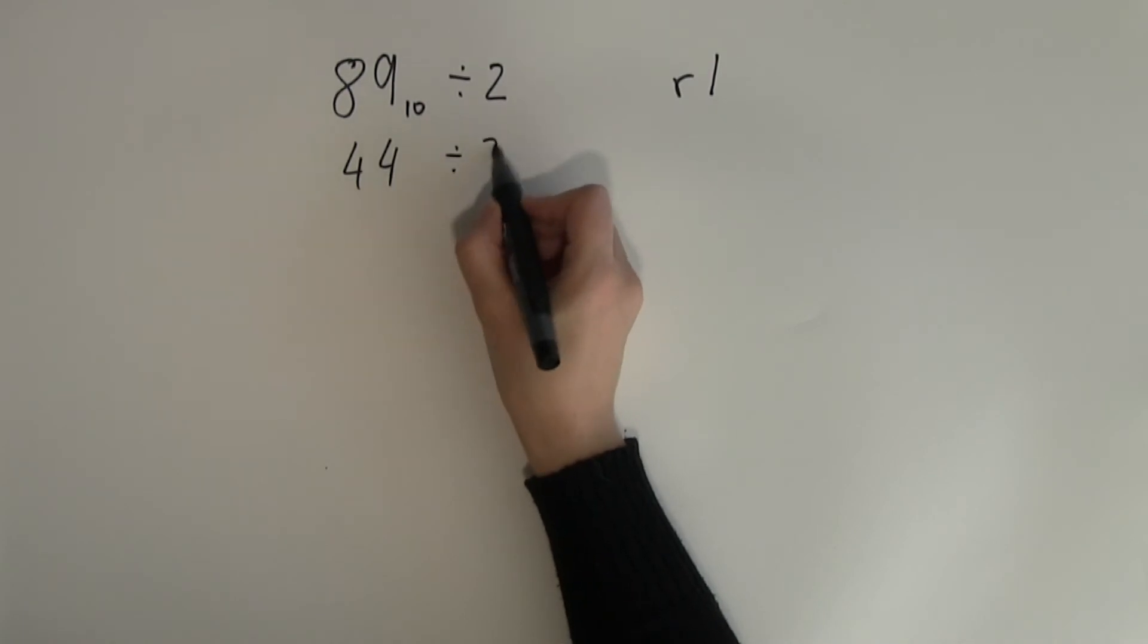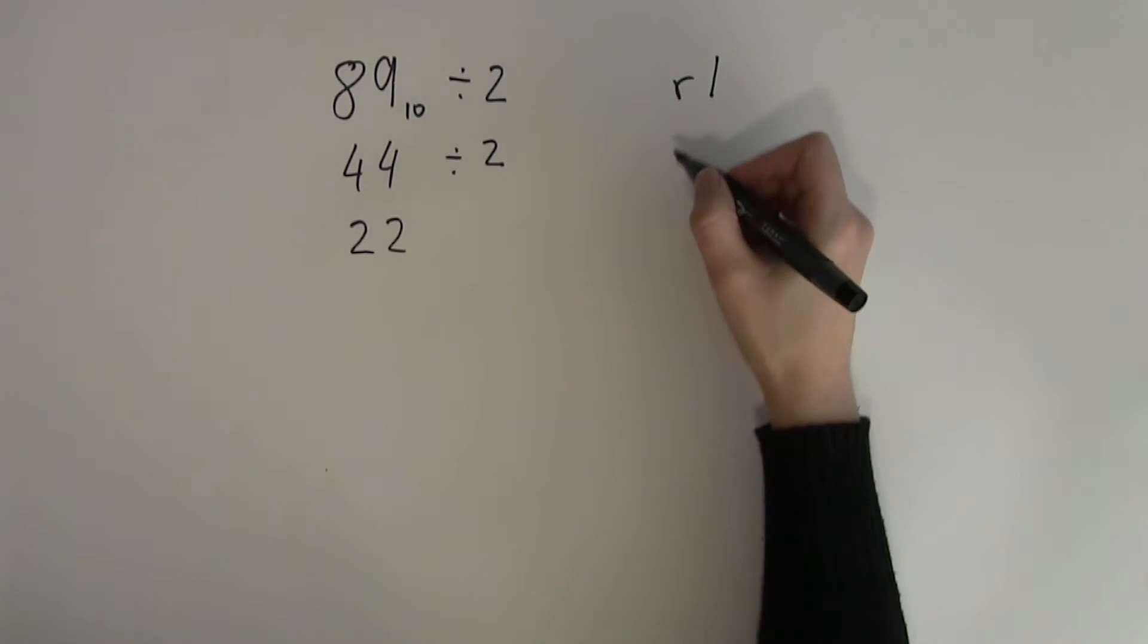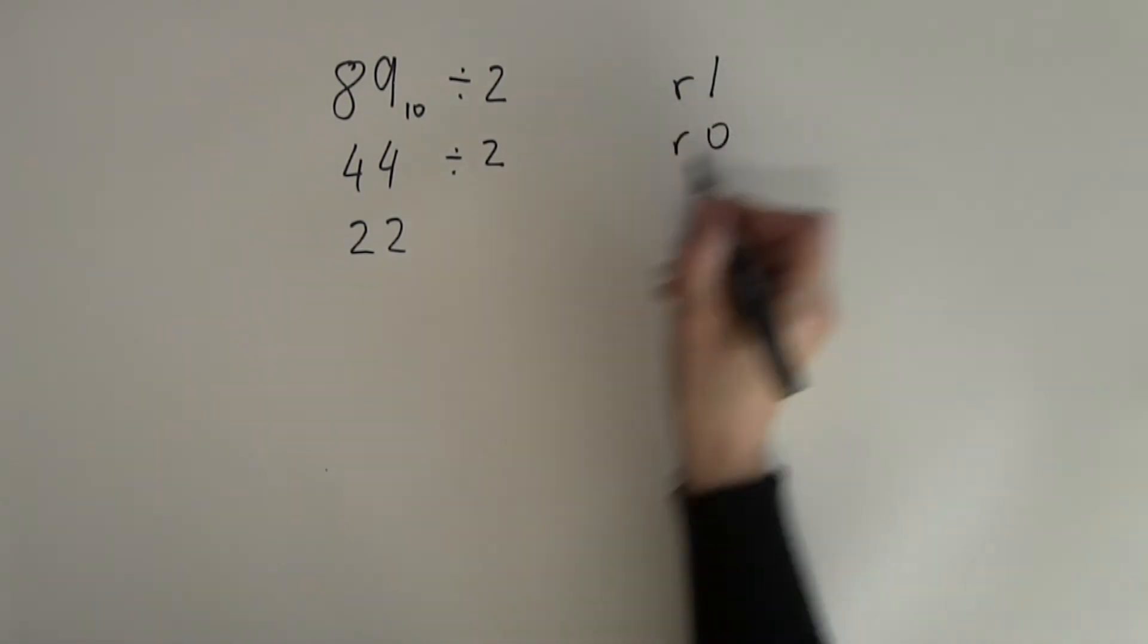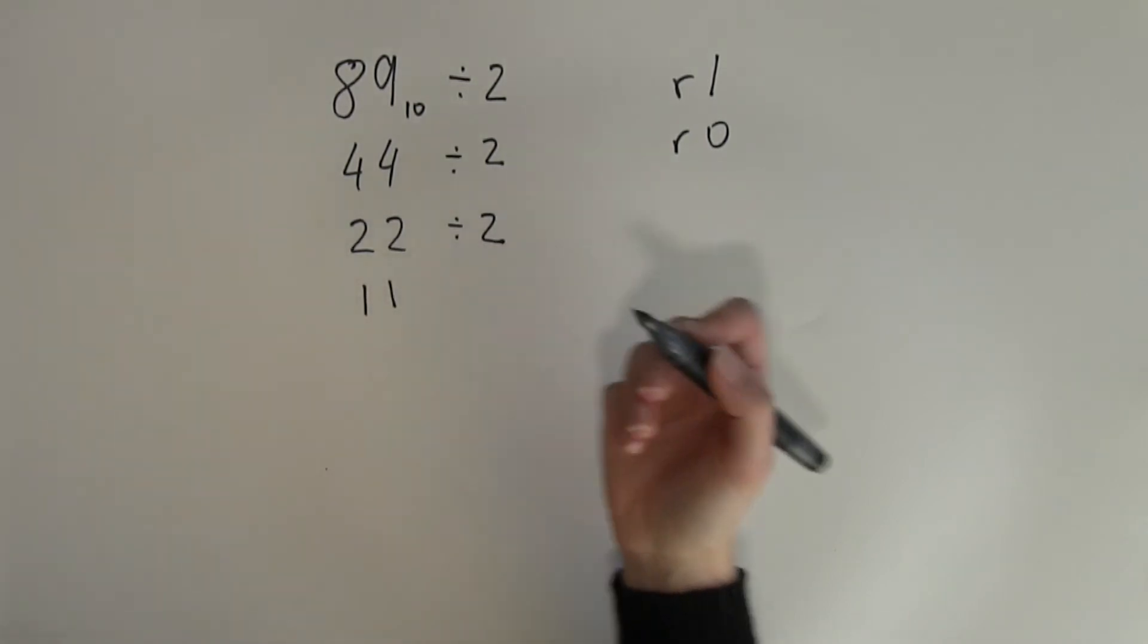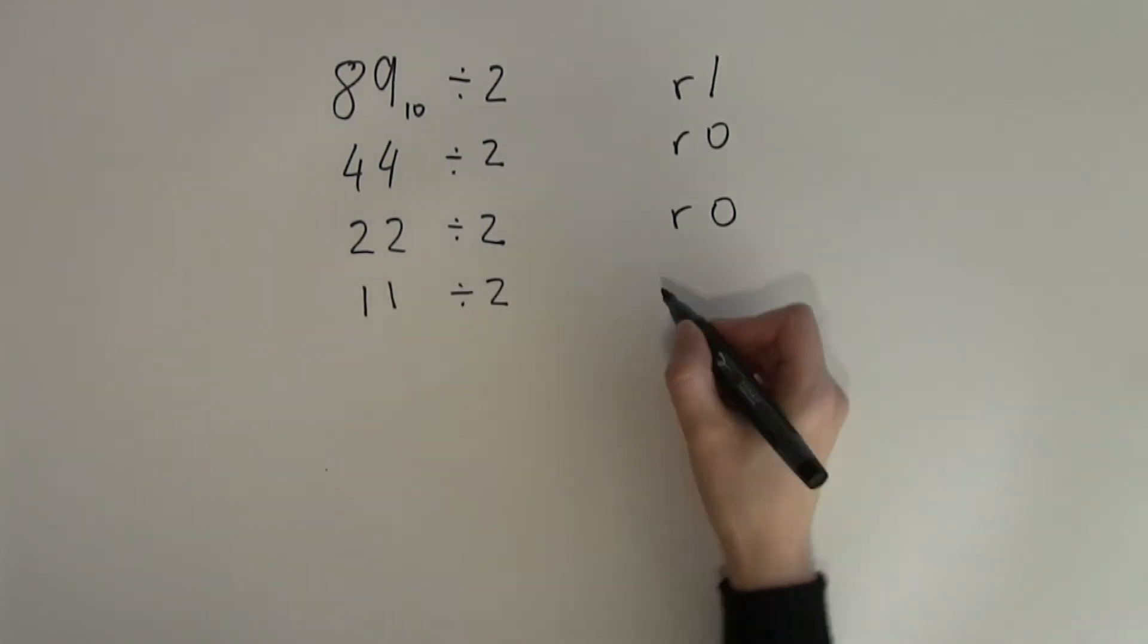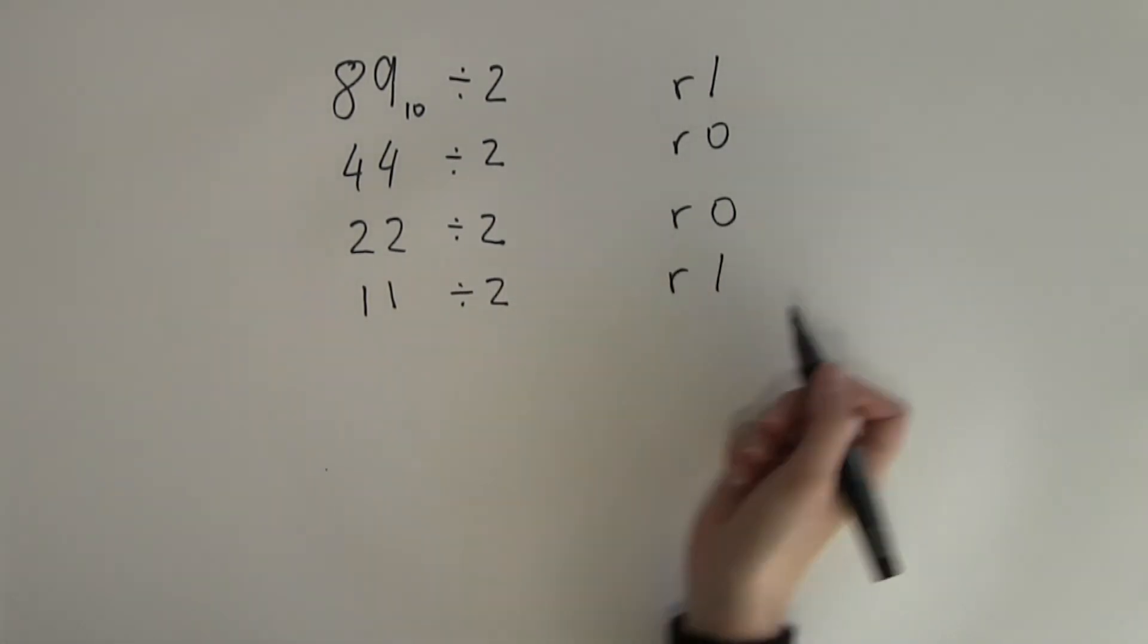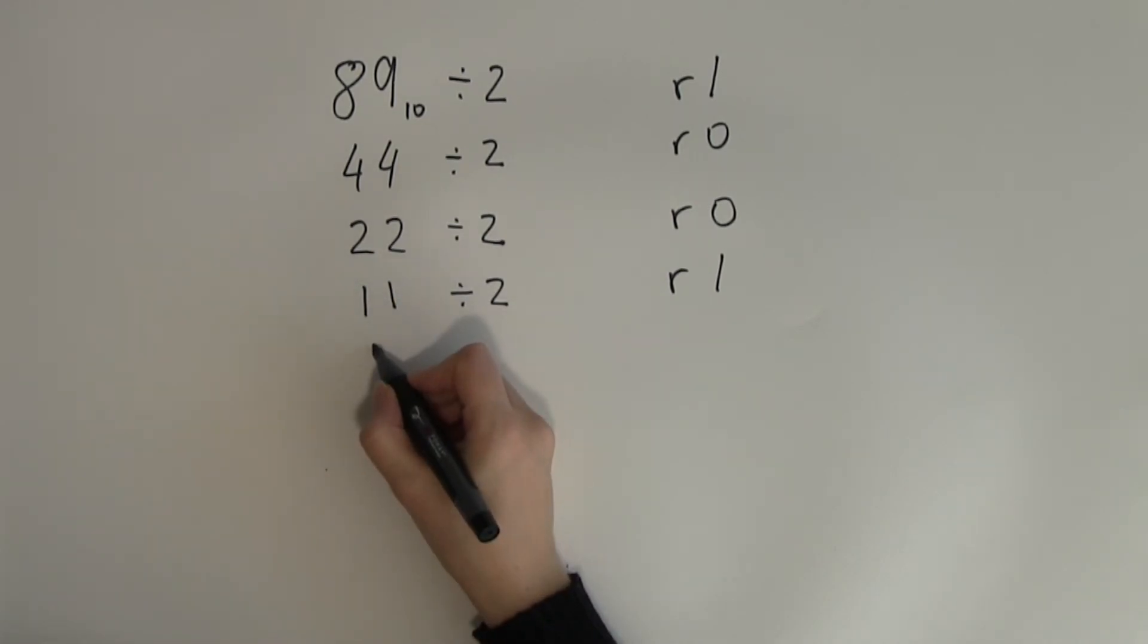44 divided by 2 is 22. Remember I'm just halving it and the remainder will be 0. 22 divided by 2 gives me 11 again half of 22 is 11 remainder 0. 11 divided by 2 again the remainder will be 1 and if I take 1 from 11 that gives me 10. So 11 divided by 2 is 5 and remainder 1.